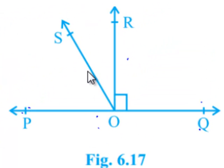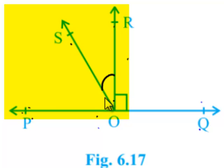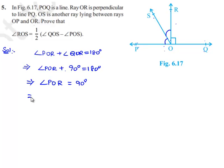If we observe the figure clearly, we can say that angle POR consists of two angles: angle ROS and angle POS. That implies angle ROS plus angle POS is equal to 90 degrees. Let us name this as equation 1.